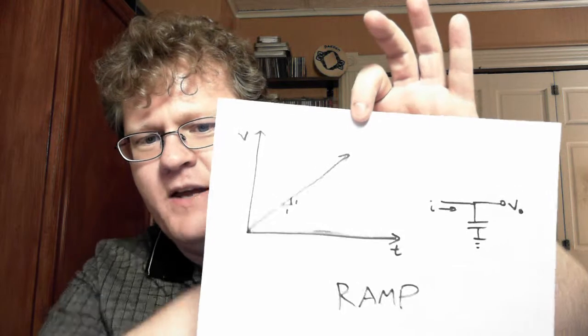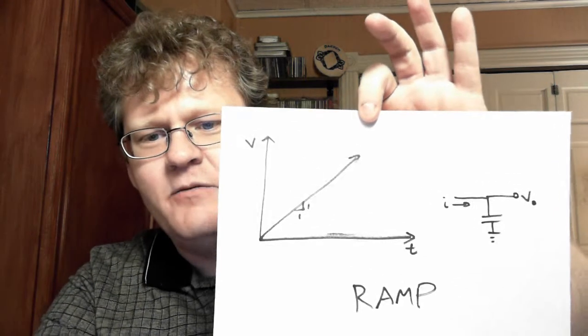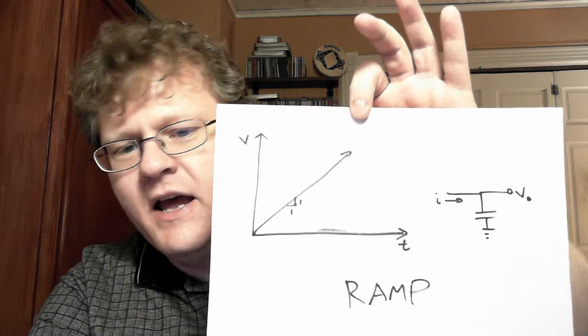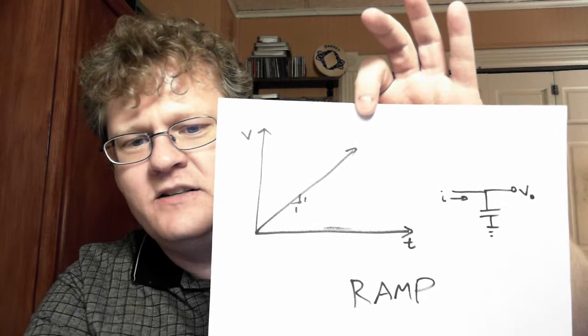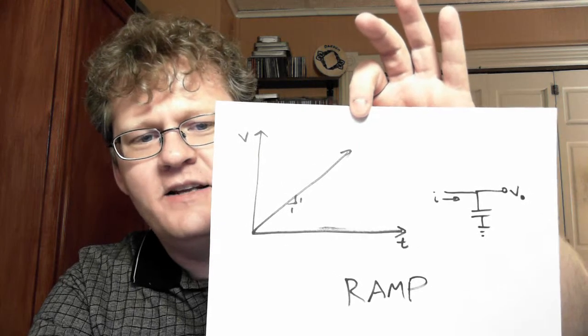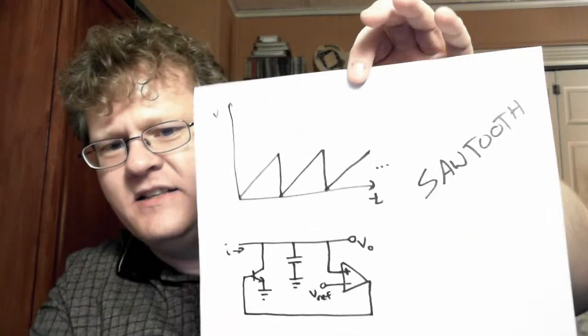So, let's talk about the ramp wave. Your basic ramp is literally exactly what it sounds like it is. You're basically integrating a current on a capacitor, and you get a voltage out, and you just get this ramp. Now, obviously, it doesn't go up to infinity in practical terms, but you don't want it to, right? You want a sawtooth wave. You want a wave that looks like that.